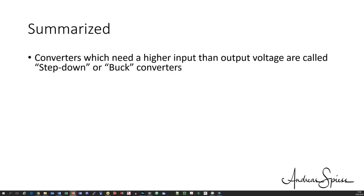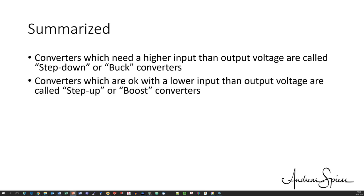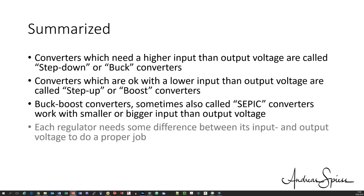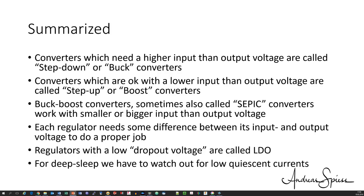Converters which need a higher input voltage than their output voltage are called step-down or buck converters. Converters which are okay with a lower input voltage than their output voltage are called step-up or boost converters. We also find buck boost converters, sometimes also called sepic converters. Their input voltage can be smaller or bigger than the output voltage. They are usually bigger devices and were not covered here. Each regulator needs some difference between its input and output voltage to do a proper job. Regulators with a low dropout voltage are called LDO. If we want to deep sleep our microcontrollers, we have to watch out for a low quiescent current. We found significant differences in these matters. But the switchers were better than I thought.